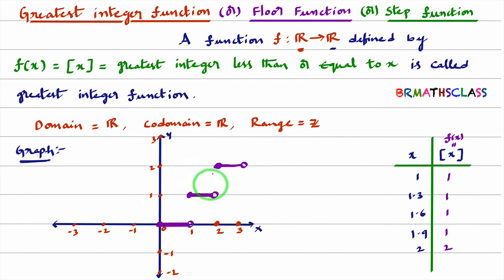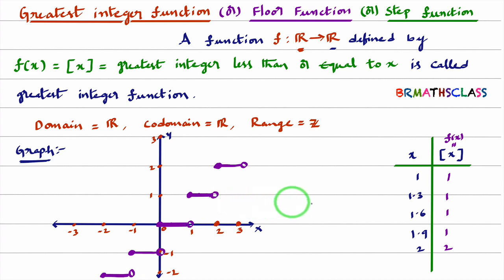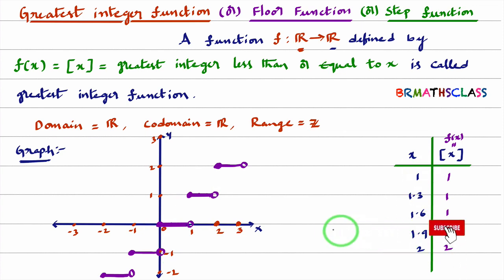I said I would tell you why they named it a step function. You can observe this graph — it looks like steps, like floor steps. That is why it is also known as the floor function. If we continue the graph further, you get more steps: each step has a closed circle on the left side and an open circle on the right side, meaning the right endpoint is not included.